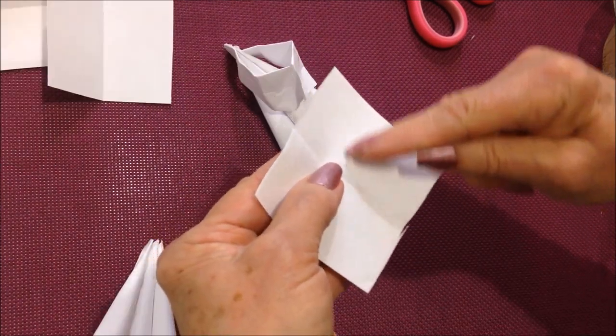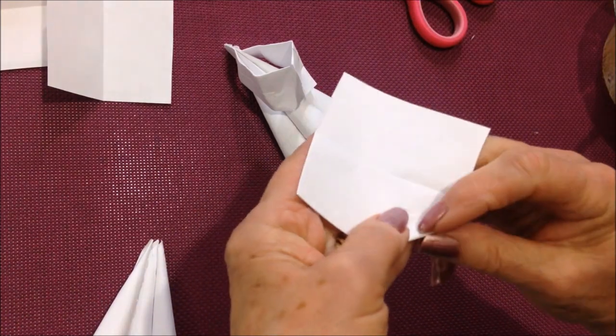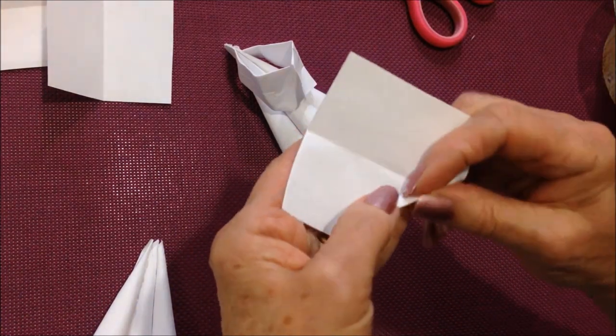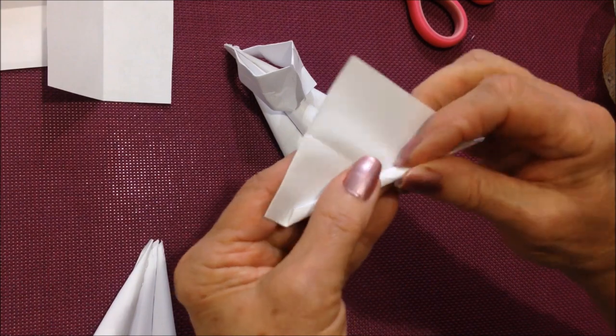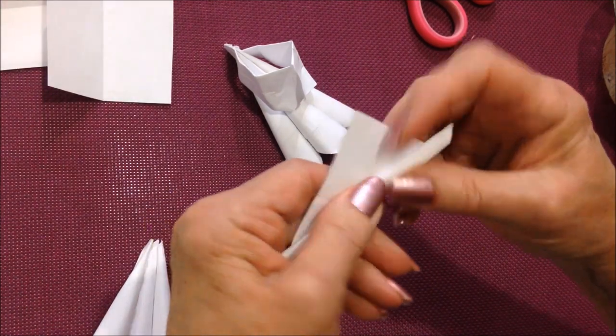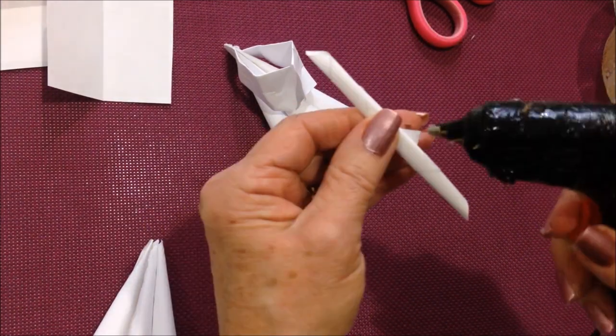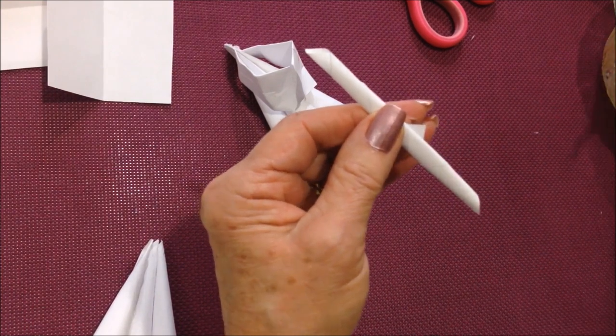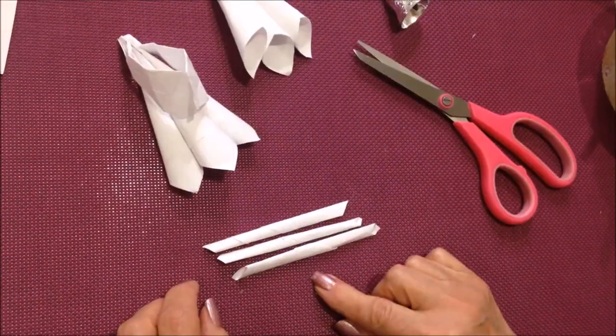For the wings, I'm going to roll these this way. So I'll just get it started and roll it. And these don't have to be in a cone. And I'm going to do two more. Okay, like that.